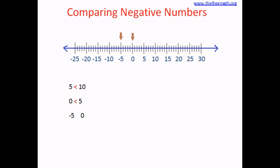Now consider negative 5 and 0. Negative 5 is on the left side of 0 and is smaller than 0, because negative 5 means 5 less than 0. The next pair is negative 10 and negative 5. Negative 10 is smaller than negative 5, because negative 10 means 10 less than 0 while negative 5 means only 5 less than 0. Negative 10 is also on the left-hand side of negative 5.